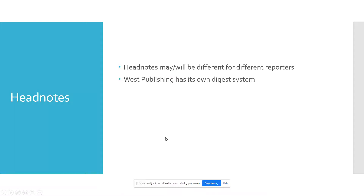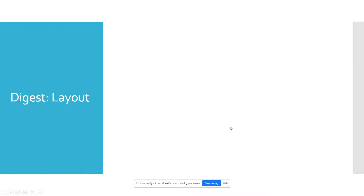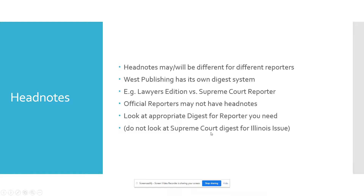Headnotes are proprietary publishing material. West has its own digest system with its own editors writing their own headnotes, so if you're looking at headnotes from Lexis or another publisher they won't have the same key numbers — they'll be different. When doing digest research, make sure your digest matches the reporter you're using. Lawyers' Edition is from Lexis and won't match the West digest. Official reporters won't have headnotes at all since they just publish what the judge wrote. Also make sure you're in the right jurisdiction — don't look in the Supreme Court digest for an Illinois issue; go to the Illinois digest.